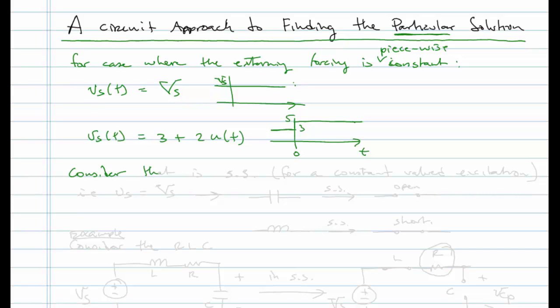So consider this: Consider that in steady state for a constant valued excitation, i.e. Vs is just equal to some constant and has been that way for a long time, then we would say that a capacitor in steady state becomes an open and an inductor in steady state becomes a short.